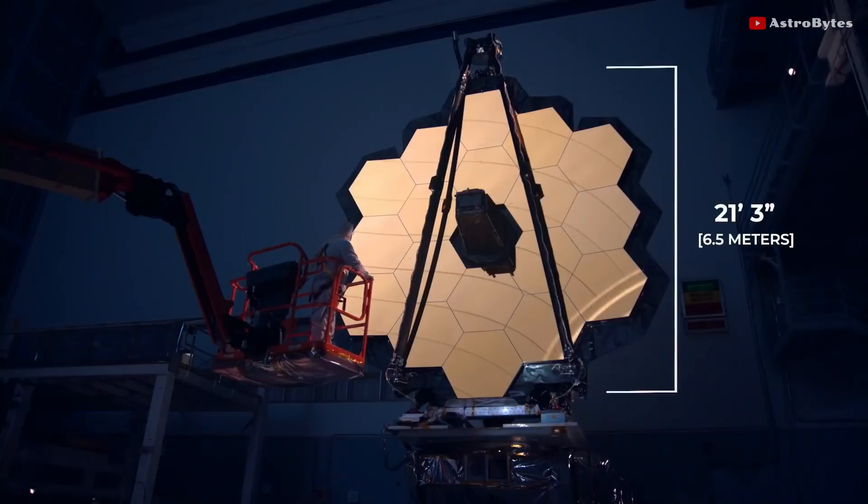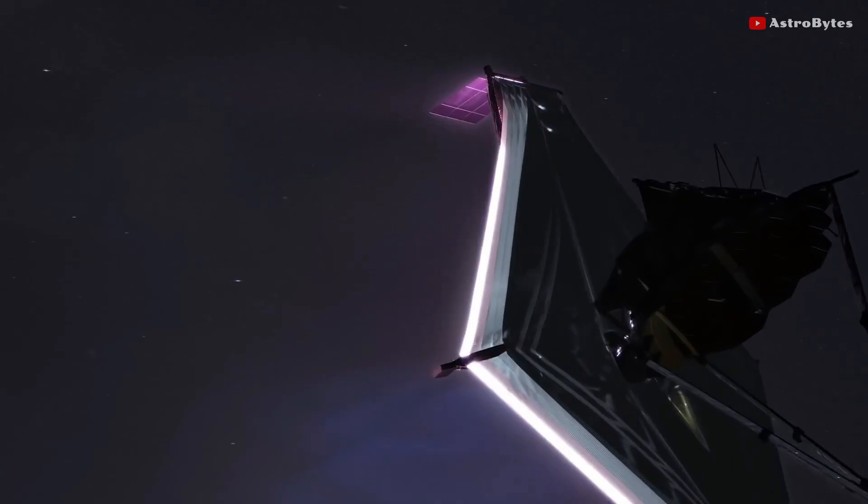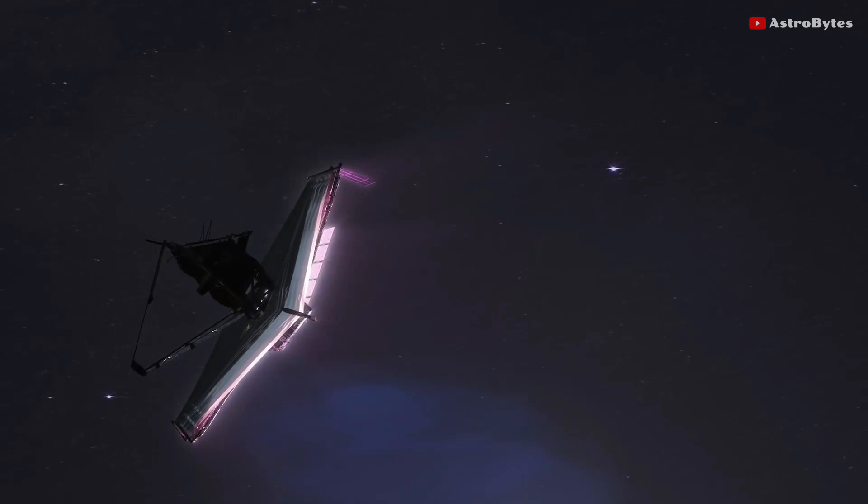The Webb Telescope also has a much bigger mirror than the Hubble Telescope. It is about one hundred times more powerful than Hubble.